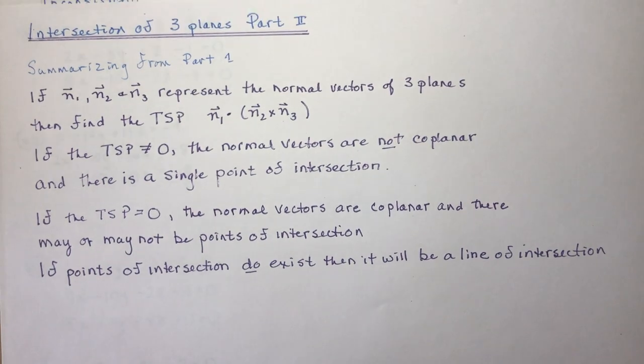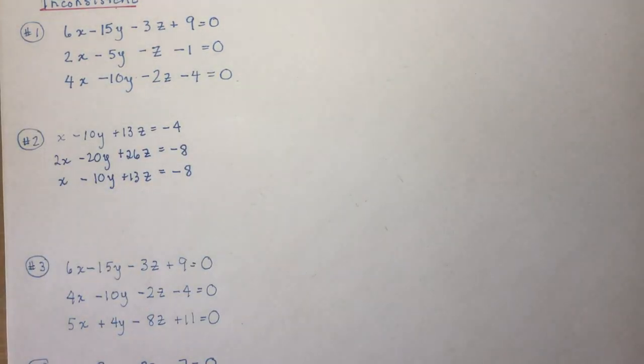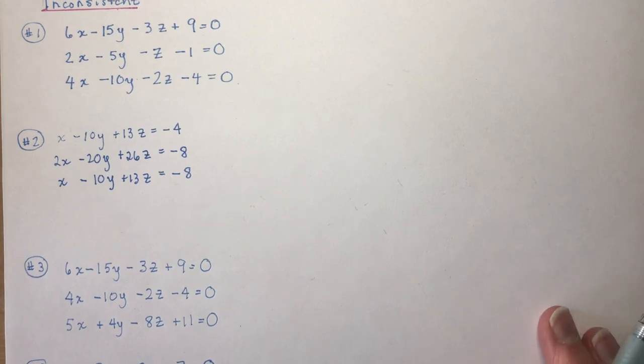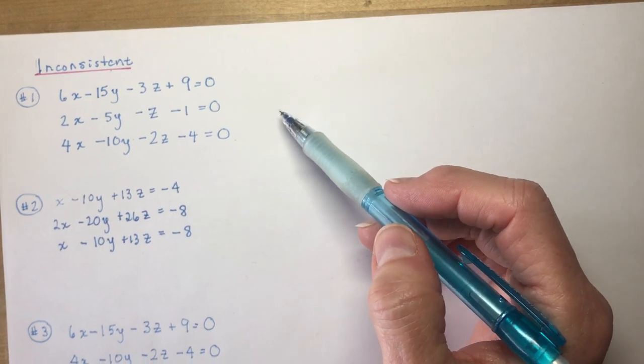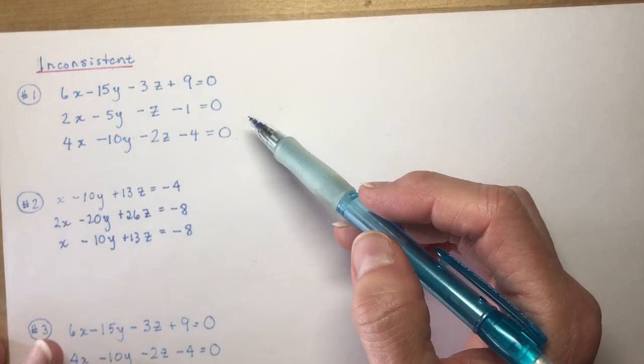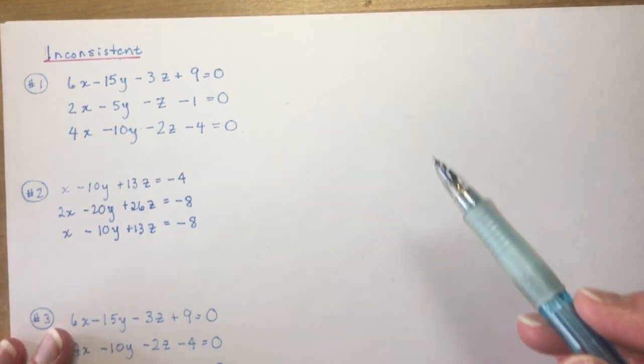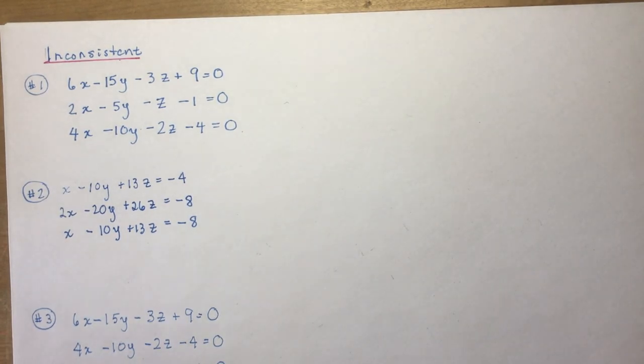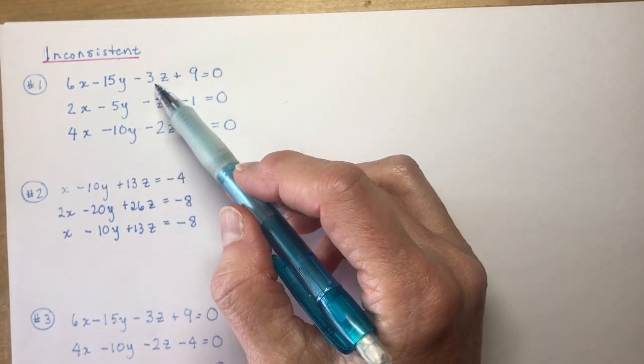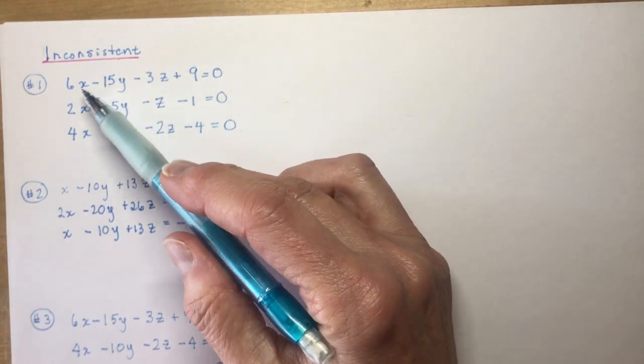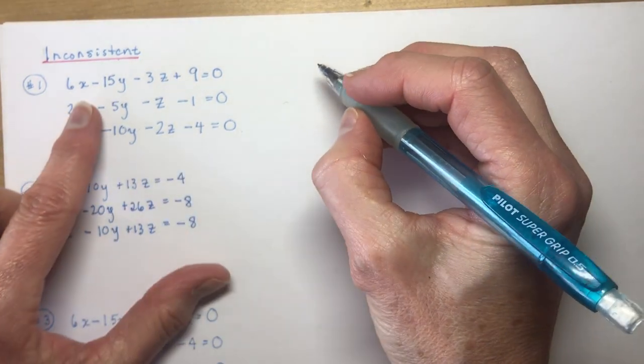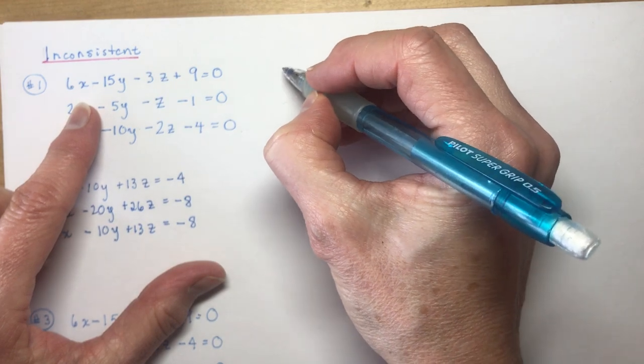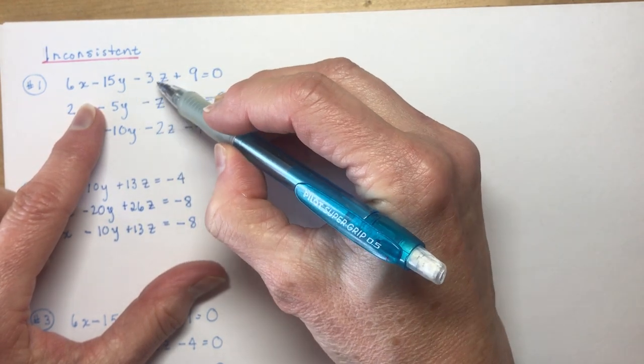Let's go now to the three types, or four types of inconsistent types of inconsistencies for the planes. Again, inconsistent is meaning the three planes will not intersect. And so, the biggest reason they don't intersect is because they're parallel. So, if we take a look at the normals for these three, so these are three plane equations, and if I just take a look at the normals here, I would have 6, minus 15, and minus 3.